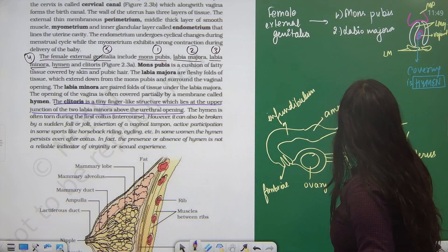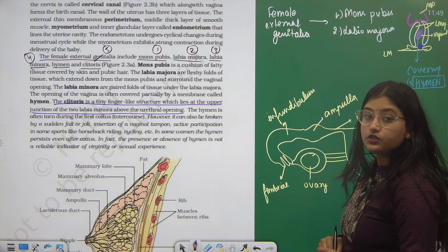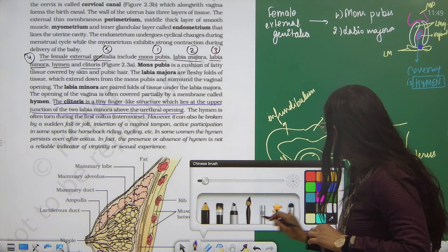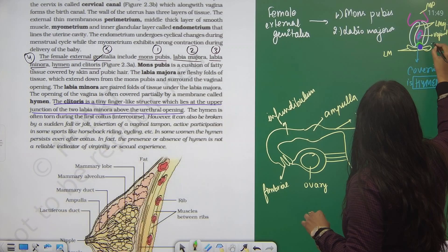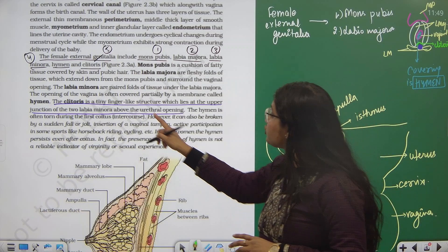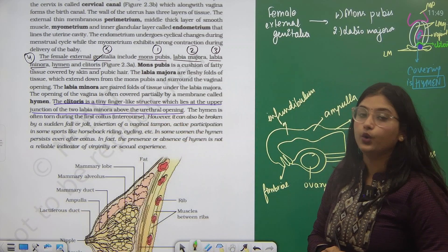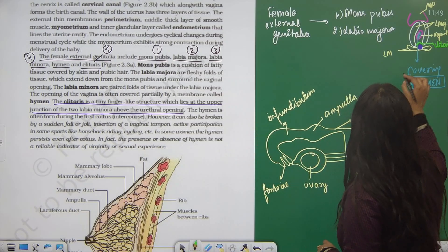We have the urethral opening also here. Just a little above we have an erectile structure which we call clitoris. It is located just above the urethral opening at the upper junction of labia minora.